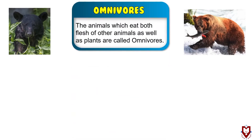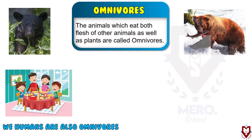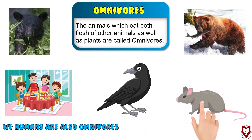Animals that eat both plants and other animals are called omnivores. Do you know that we humans are also omnivores? For example, we eat meat, fruit, beans, and rice — food from both plants and animals. Crow and rat are some other examples of omnivores.